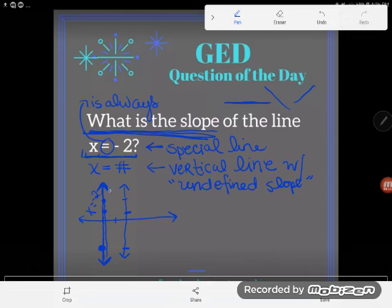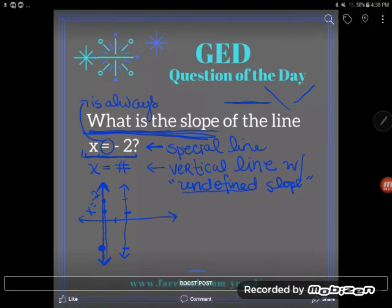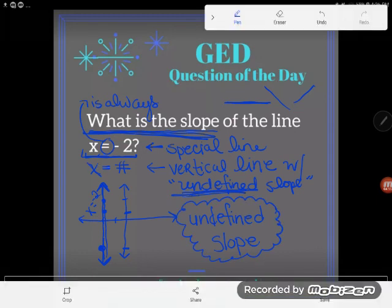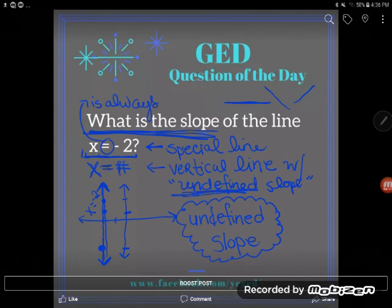But we always describe those vertical, those straight up and down lines as having an undefined slope. And so if you did not know that, that is the key concept to take away from this video. Any line that goes straight up and down has an undefined slope, any vertical line. And if you're lazy like me, you'll want to remember that when x is just equal to a number, it's a vertical line with an undefined slope.